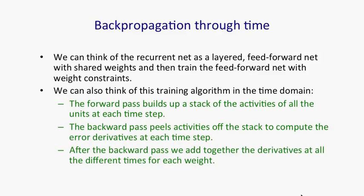After the backward pass, we can add together the derivatives at all the different time steps for each particular weight, and then change all the copies of that weight by the same amount, which is proportional to the sum or average of all those derivatives.